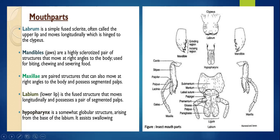The hypopharynx is somewhat globular in shape, arising at the base of the labium like a tongue. It assists in swallowing food. So these are the basic mouthparts of an insect: labrum, labium, pair of mandibles, pair of maxillae, maxillary palps, and the tongue called hypopharynx.